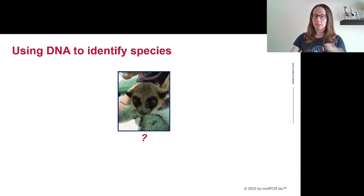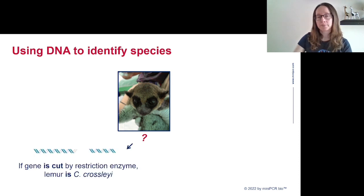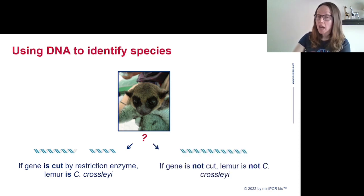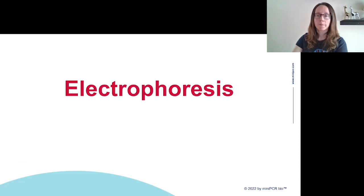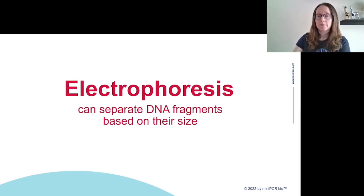We can use a tool called a restriction enzyme that acts like a pair of molecular scissors. In this lab, our restriction enzyme will only cut the Cyt B sequence that's specific to the lemur species C. crossleyi. It will not be able to cut the Cyt B sequence if it comes from any other lemur species. So if we're asking if this other lemur belongs to the same species, we can look to see if its Cyt B gene can be cut by our restriction enzyme.